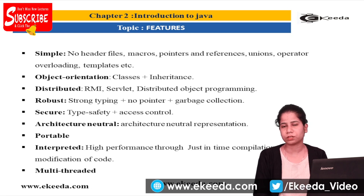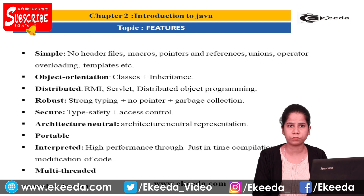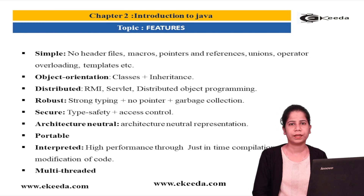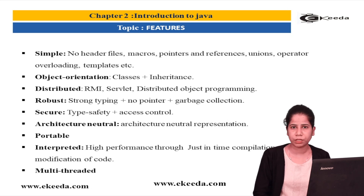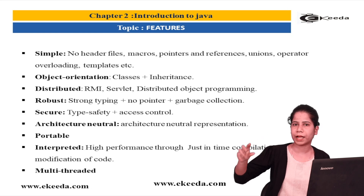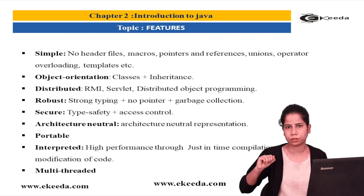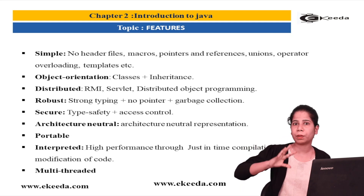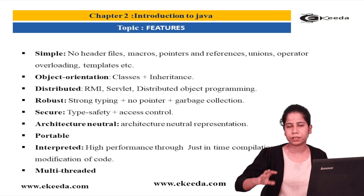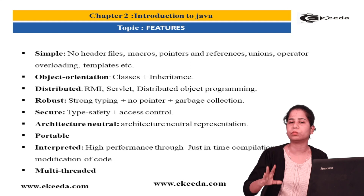The next feature is that Java is a secure language. We have already seen JVM, bytecodes, bytecode verifier, and access specifiers — because of these, Java is a secure language. Type safety and access control contribute to security. Java has different types of visibility: a particular piece of code can be made private, public, protected, or default. All these access specifiers make the language and the code more secure.